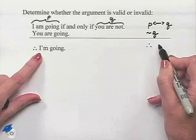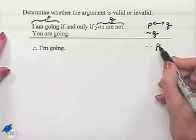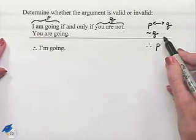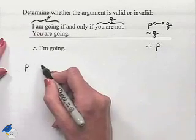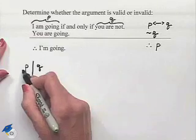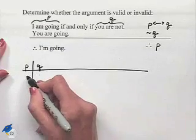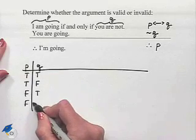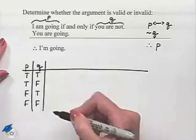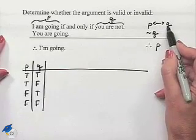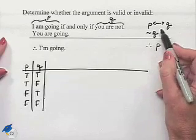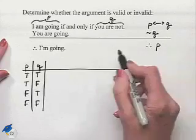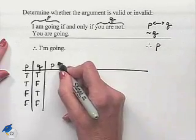'You are going' is going to be the negation of Q, and 'I am going' is going to be P. Now to determine whether or not this is a valid argument, we're going to use truth tables. Notice we have two simple statements P and Q. Let's draw in our usual first two columns: true/true, true/false, false/true, false/false. What we're going to do is take each premise and put it together with an AND statement, then see whether or not that implies the conclusion.